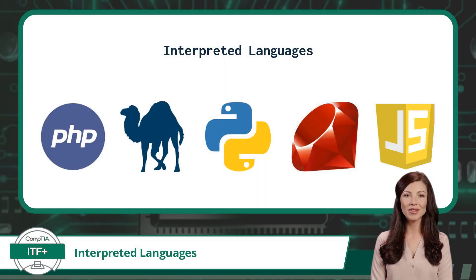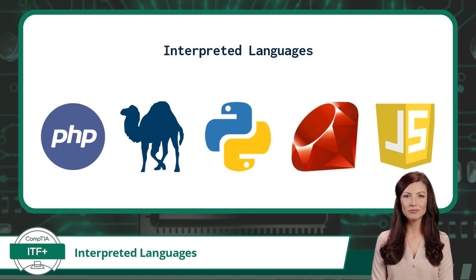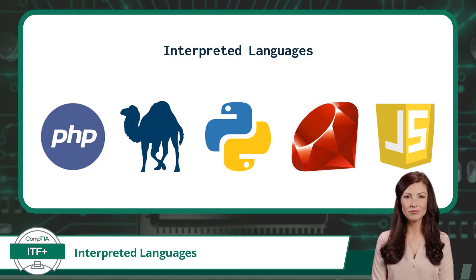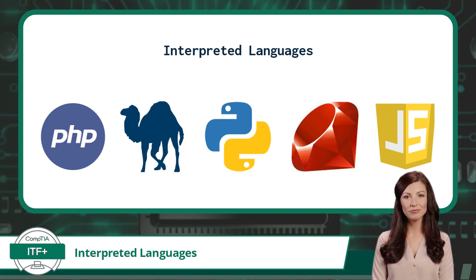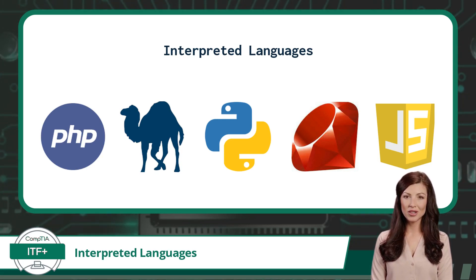To wrap things up, let's take a quick look at some popular interpreted programming languages. We have PHP, Perl, Python, Ruby, and JavaScript — which should never be confused with Java.